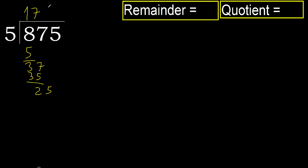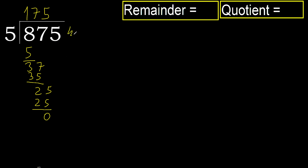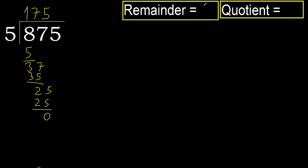5 multiplied by 5 is 25. 25 is not greater. Ok. Subtract: 0. Next — that is not a number, therefore finish it.